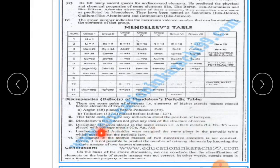Alkali metals are placed with coinage metals. Lanthanides and actinides are assigned the same place in the periodic table, which goes against the periodic law.